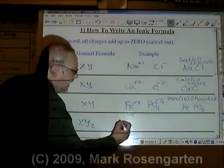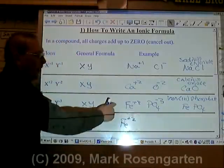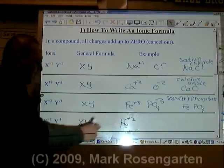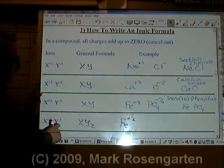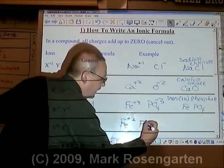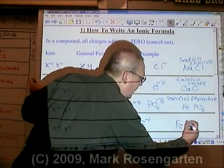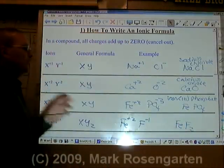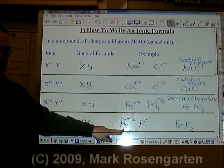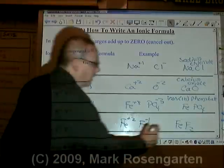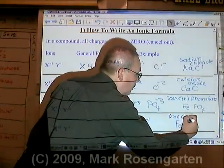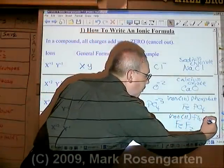For example, if we happen to have iron plus two. Remember, iron has two possible charges, and this is one of them. And let's say we have fluoride, F⁻¹. Then the formula will be FeF₂, because it will take two of the smaller charge to cancel out one of the larger charge. The name of this compound is iron two fluoride.